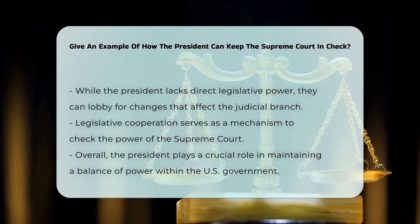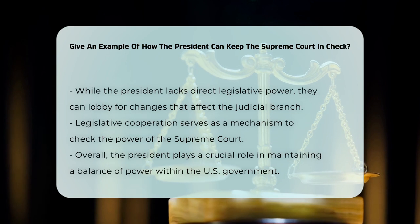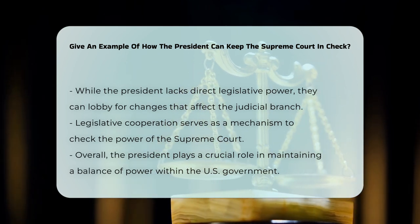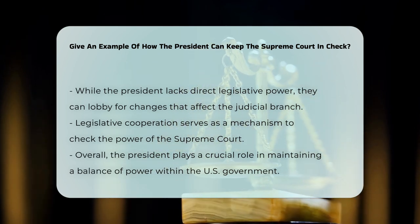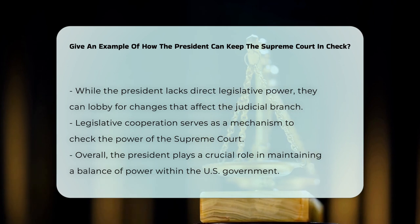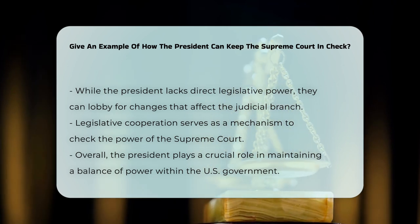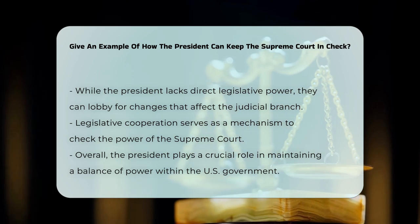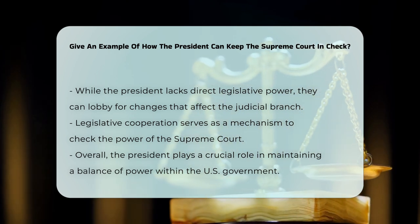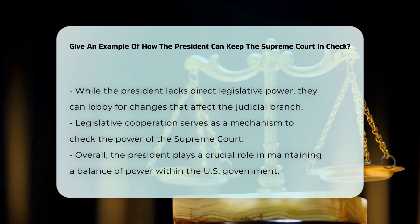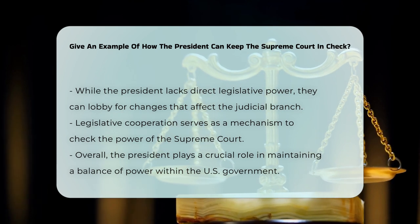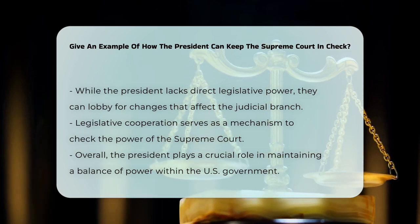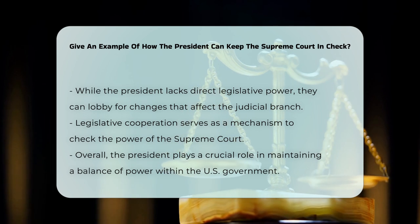Legislative cooperation. Although the president does not have direct legislative power, they can work with Congress to pass legislation that limits the court's jurisdiction or modifies the impact of a court decision. Congress has the authority to change the court's jurisdiction, and the president can support or lobby for such legislative changes. This cooperative approach between the executive and legislative branches can serve as a check on the judicial branch's power.